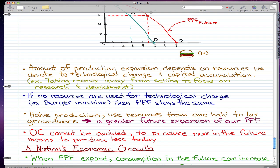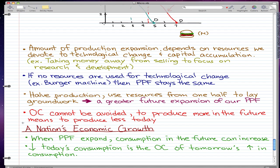Lastly, in this section, opportunity cost cannot be avoided. That is something you have to keep at heart—opportunity cost can never be avoided. To produce more of something, we have to give up something if we're already doing something as efficiently as possible. Opportunity cost cannot be avoided. To produce more in the future means we have to produce less today.